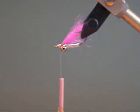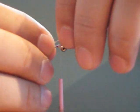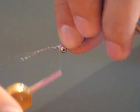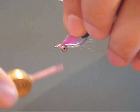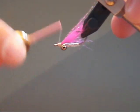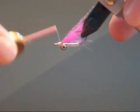Make a nice taper to the head. The next step you want to take some crystal flash and add that to the fur. It will be part of your wing. What I do is take two strands, tie it in, then double it back over. Make a nice head.